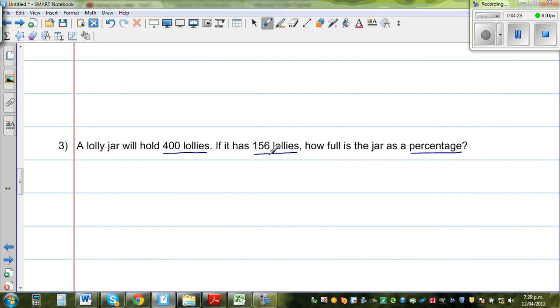So it's full by 156 lollies. So basically what they have given is you have got 156 out of 400. You could fill the lolly jar by 400, but now it has 156. So how much is this as a percent? So this is 156 out of 400. So can I write this? I'm going to do without the calculator.